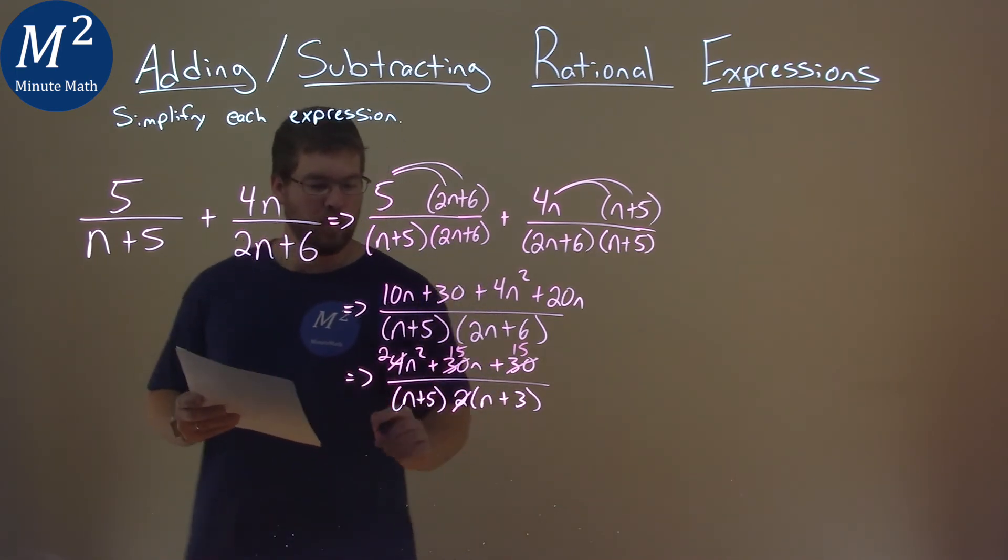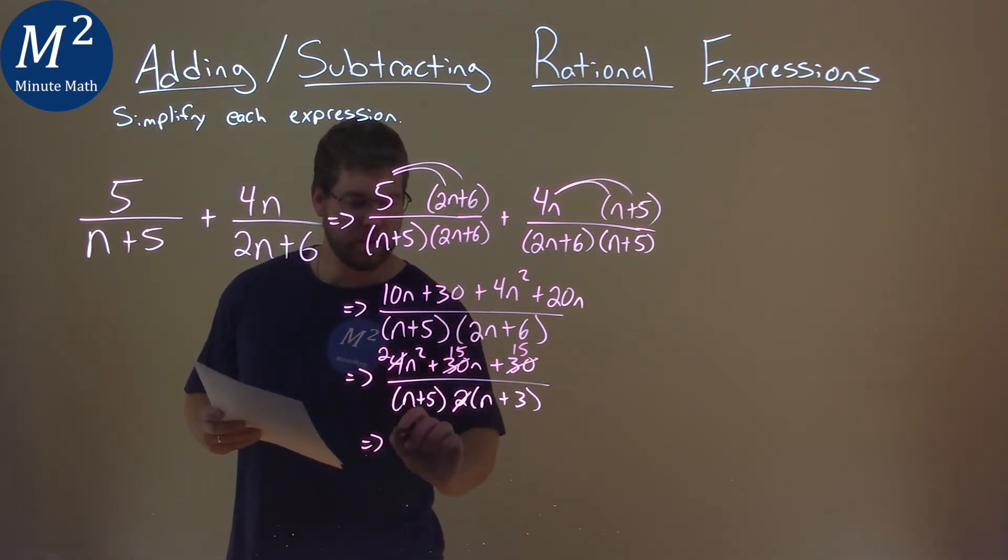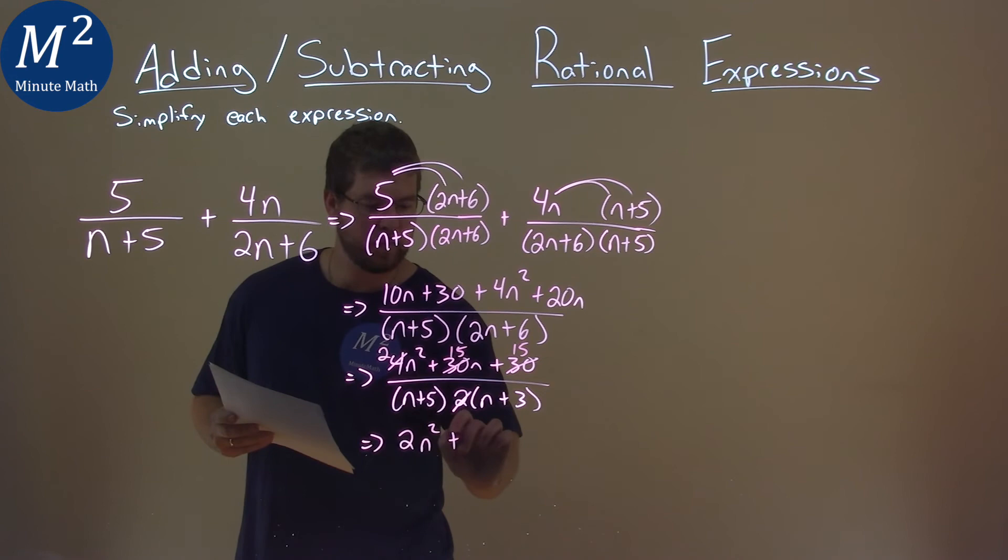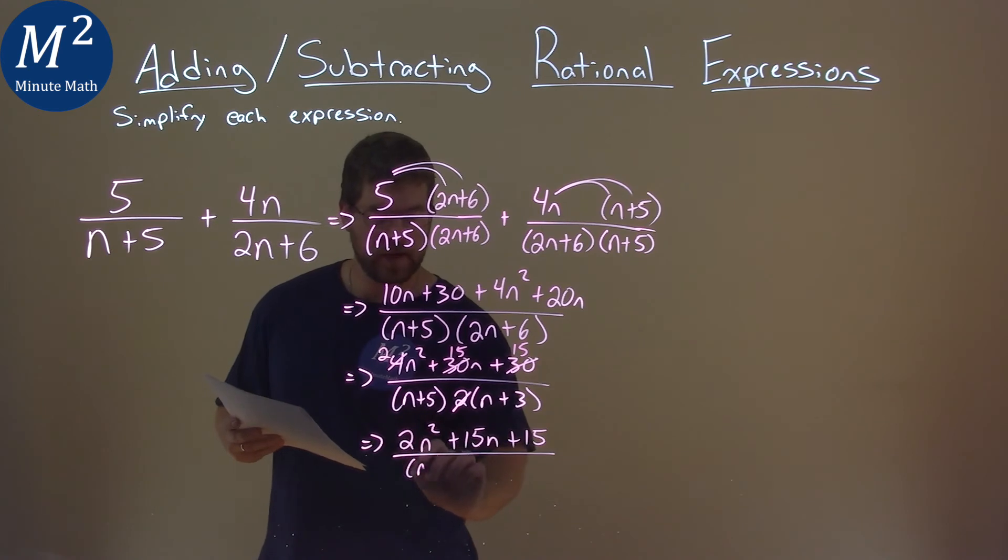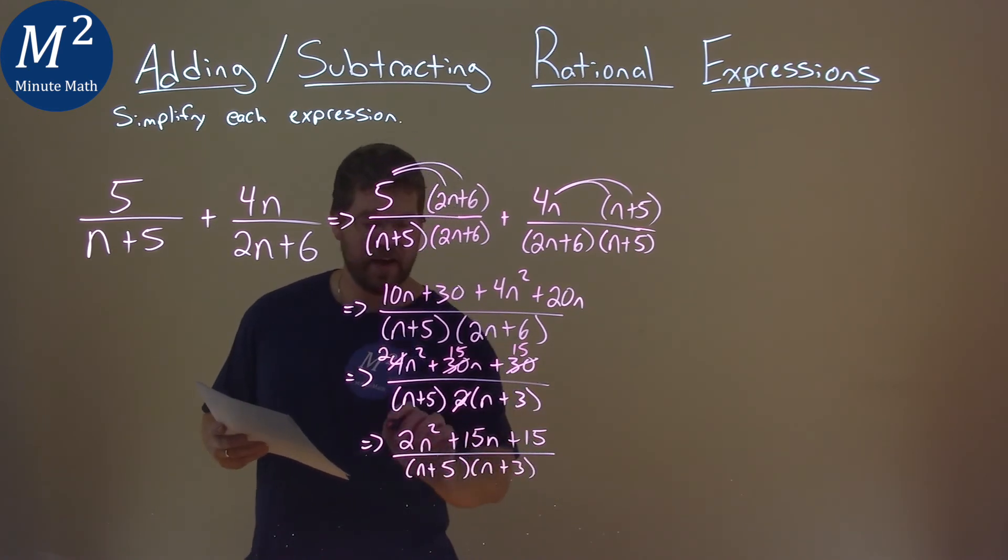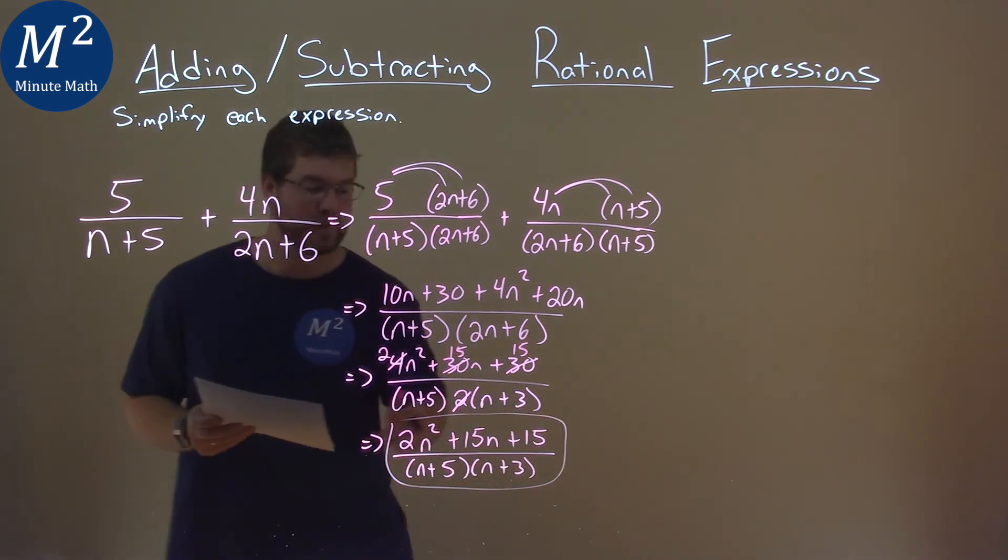And so with that, we can come down here. We have 2n squared plus 15n plus 15 over our denominator, which is n plus 5 times n plus 3, and that is our final answer.